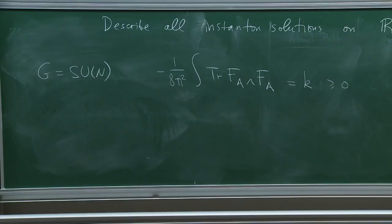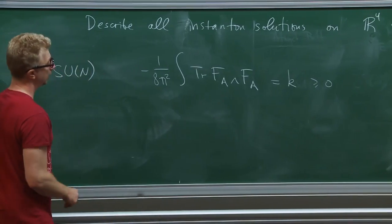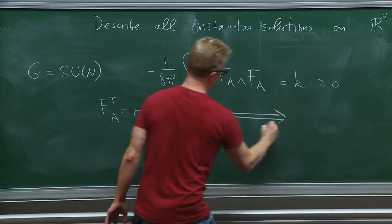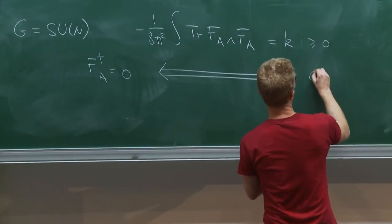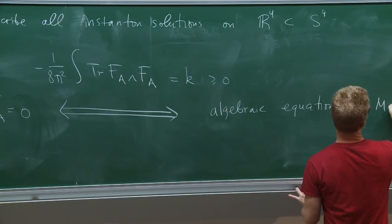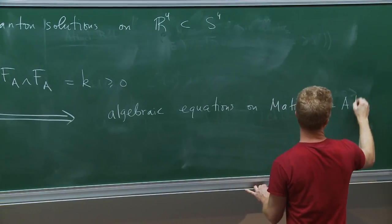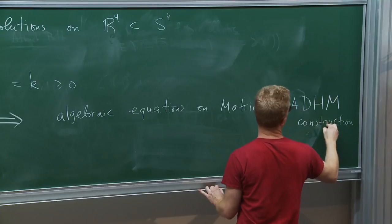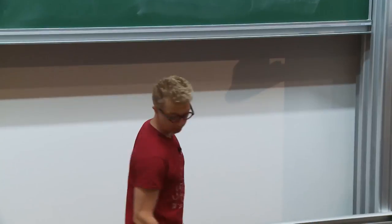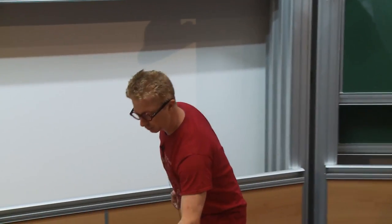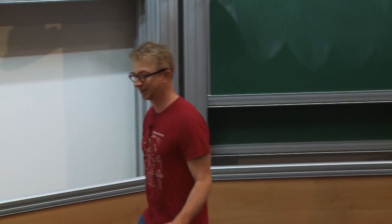It turns out that instead of solving partial differential equations, you can solve algebraic equations on matrices. This is known as the ADHM construction — Atiyah, Drinfeld, Hitchin, and Manin — which grew out of the study of twistors, which in turn connects to the inverse scattering method in integrable equations (Zakharov–Shabat).